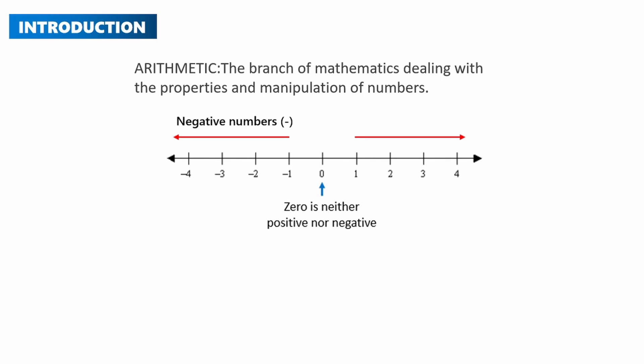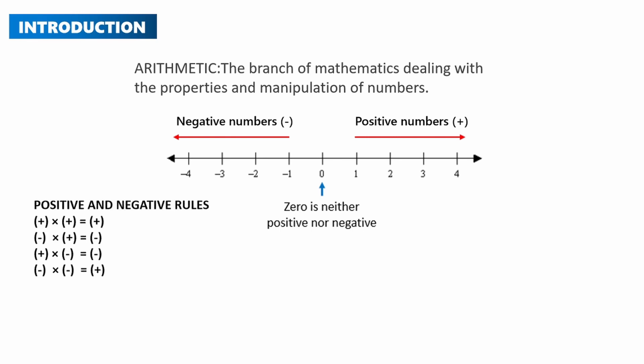To your left we have the negative numbers and to your right we have positive numbers. Now let's look at the rules when multiplying positive and negative numbers. The first rule: positive times positive equals positive. Negative times positive equals negative. Positive times negative equals negative. And finally, negative times negative equals positive.